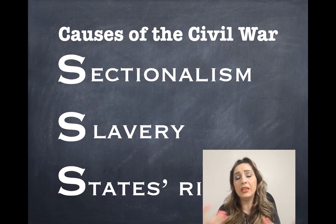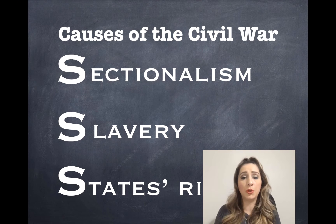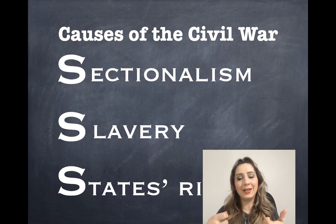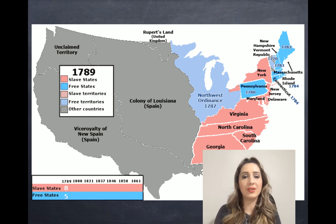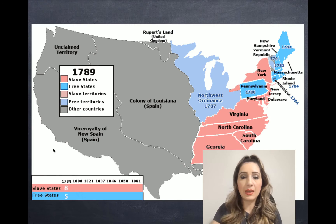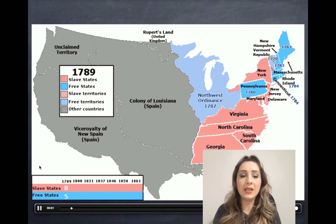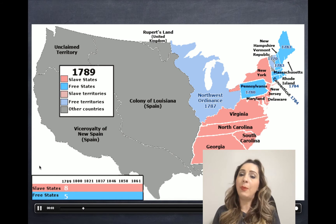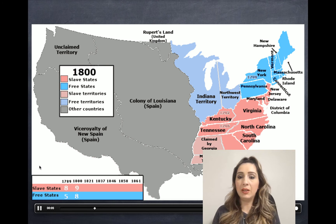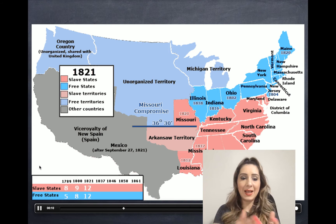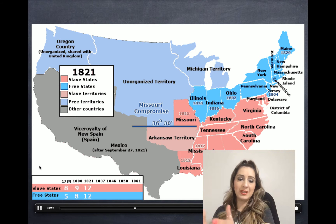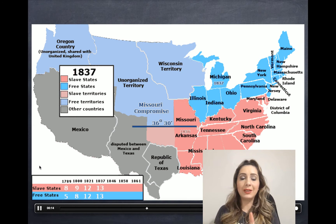Let's talk about some things that are really tightening that tension between the north and the south. The first is the idea of congressional power — the north having free states and the south having slave states. As time progresses, you can see in the timeline we're trying to keep a balance between free and slave states.